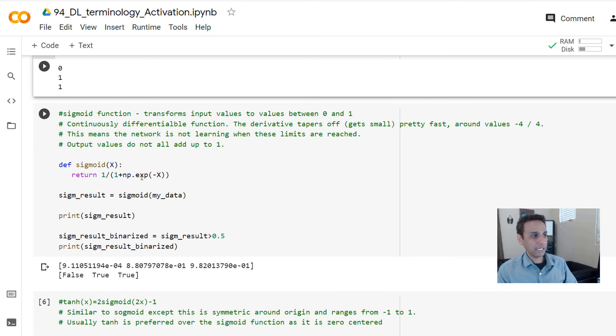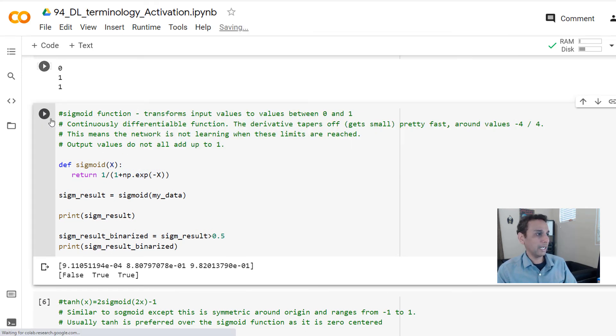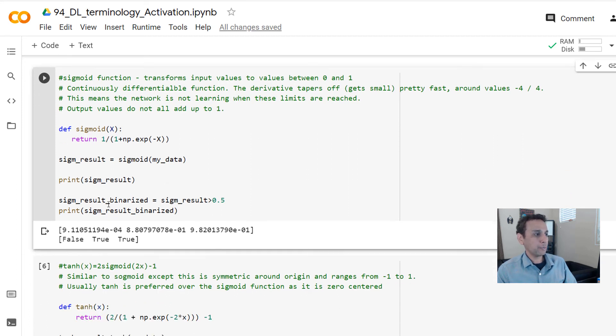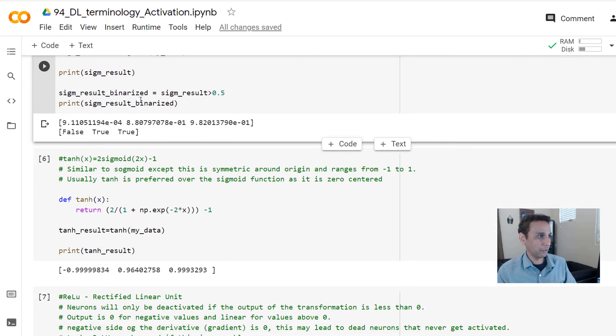Sigmoid is one over one plus e to the power of minus x. That's the equation there. And let's run our inputs through these. And in addition to printing out the inputs, I'm also printing out binarization. So what do you do when you get these type of outputs from the network? You want to convert that into a decision or a classification. So here I'm saying that if my result is greater than 0.5 probability or 0.5 from the sigmoid output, then go ahead and say that's true. So if you look at the probability, the first one is 0.309, and this is 0.88, this is 0.98, and false, true and true. So this is how sigmoid can be used for classification in general, definitely binary classification.